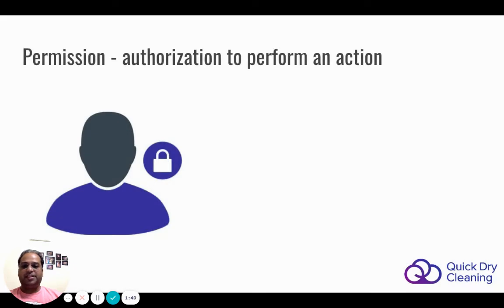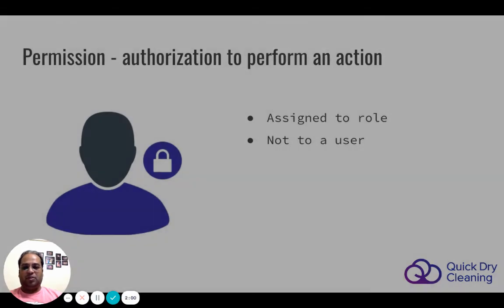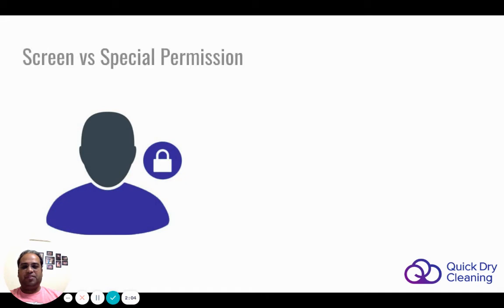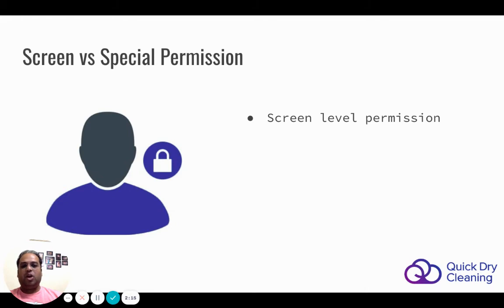Now let's understand what is a permission. A permission is an authorization to perform an action. The important point to remember is that permissions are always assigned to a role, never to a user. There are two types of permissions in QDC. The first is a screen-level or module-level permission, by which a user can access a section of the software — for example, the order report. If someone has order report permission, they will be able to see order details.